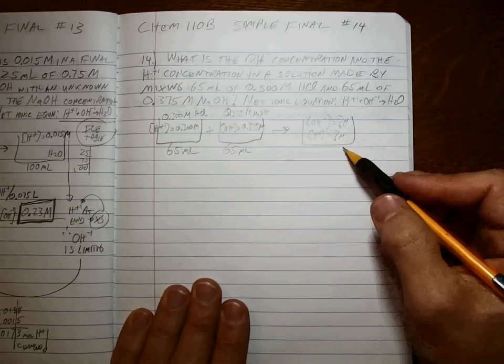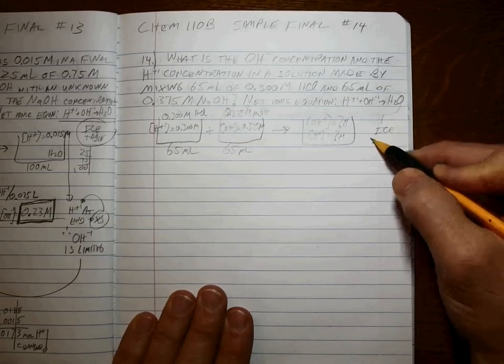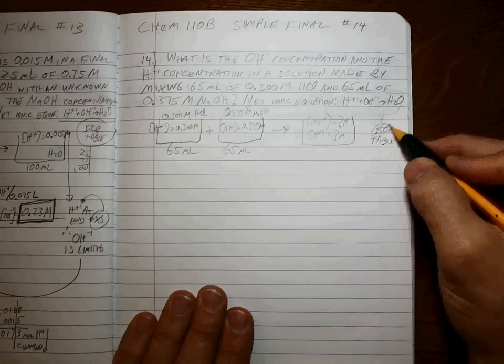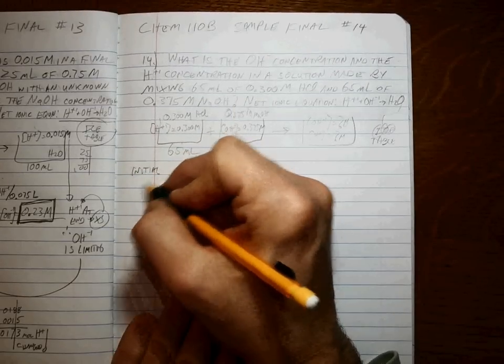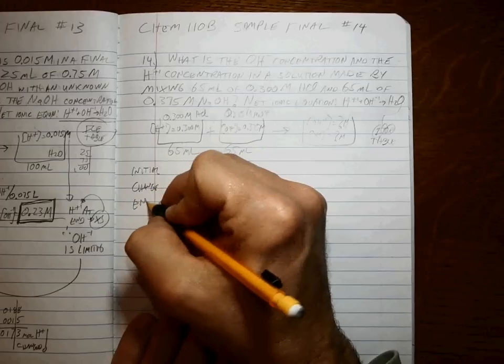Okay, we want to know what these are left at the end. It's a reaction, so that means ICE table, which means initial, change, end. Good.